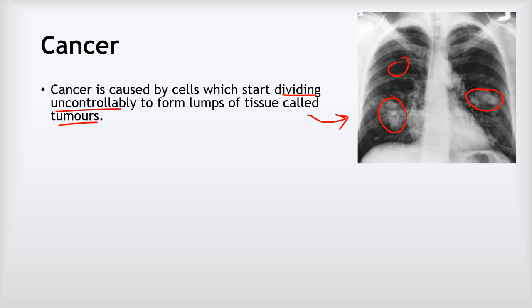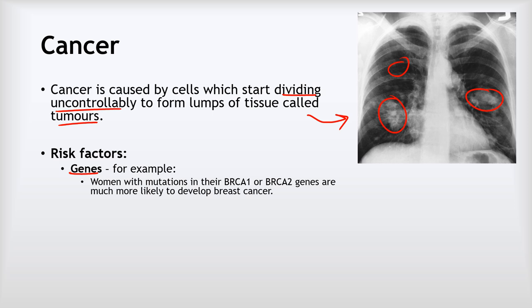In terms of risk factors for cancer, genes are a definite risk factor. Women with mutations in their BRCA1 and BRCA2 genes are much more likely to develop breast cancer — around an 80 to 90 percent chance. If you are from an Ashkenazi Jewish population you are much more likely to have BRCA1 or BRCA2 gene mutations, and so many people from that background will get checked for those genes and take pre-emptive decisions about breast removal surgery and prosthetics because their chance of cancer is so high.